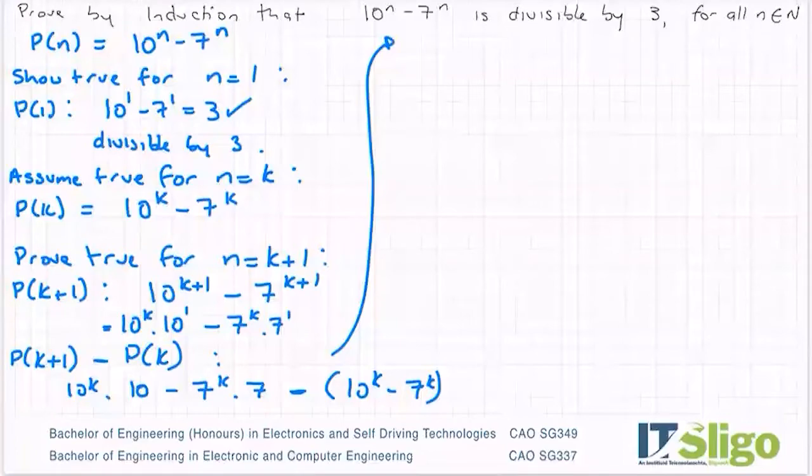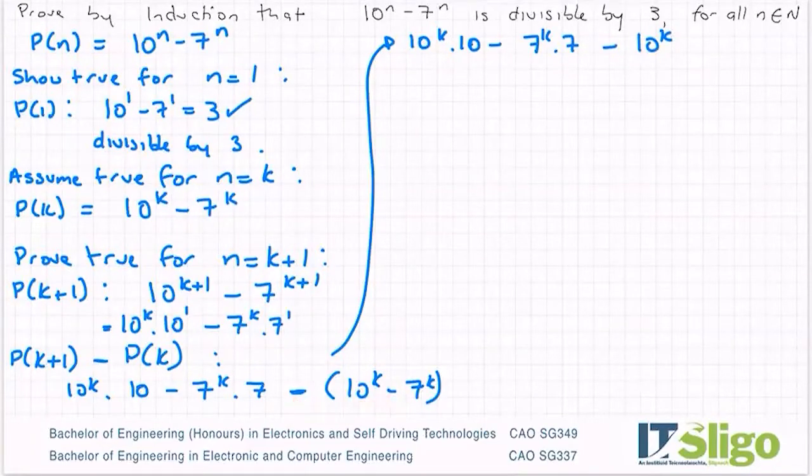So I will have 10 to the power of k by 10 minus 7 to the power of k by 7 minus 10 to the power of k. And then down here I have minus minus, so I have plus 7 to the power of k.